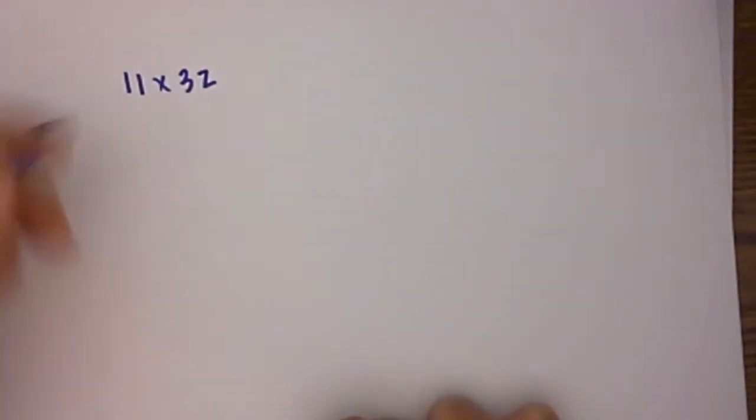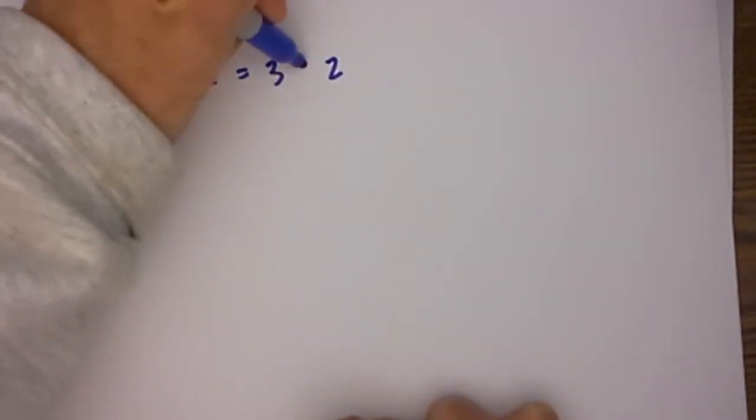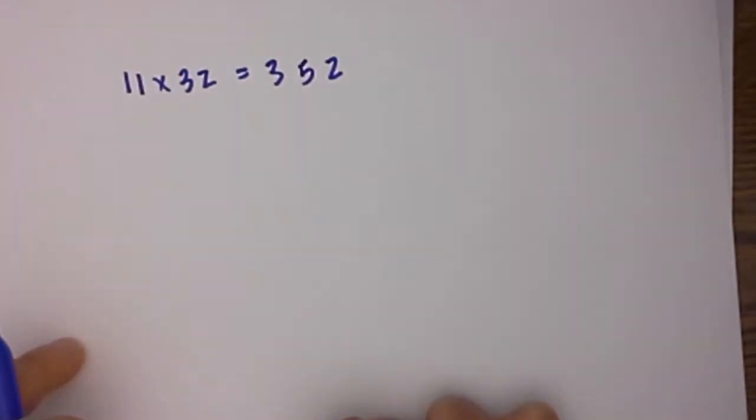Say you have the problem 11 times 32. What you can do instead of multiplying it out is simply spread the two numbers, then add the two numbers together for the middle digit. So 11 times 32 is 352.